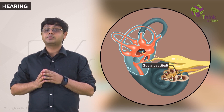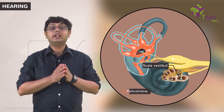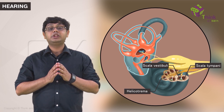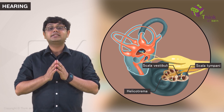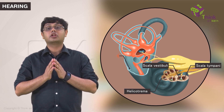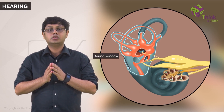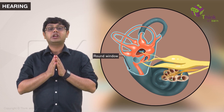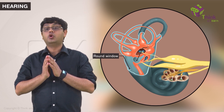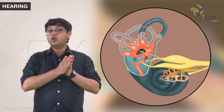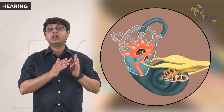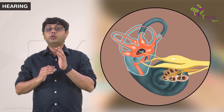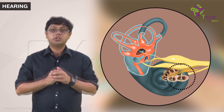The fluid moves up the spirals to the helicotrema, where it moves into the scala tympani and descends to reach the round window. The round window then moves in the opposite direction of the oval window — so if the oval window is pushed inwards at a given moment, the round window is pushed outwards.